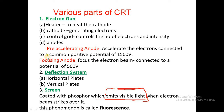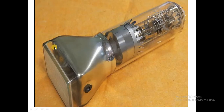We have two types of anodes in the CRT tube: pre-accelerating anode and focusing anode. The pre-accelerating anode accelerates the electrons and is connected to a common positive potential of 1500 volts. The focusing anode focuses the electron beam and is connected to a potential of 500 volts. The deflection system consists of horizontal plates and vertical plates. The screen is coated with phosphorus, which emits visible light when the electron beam strikes it — this phenomenon is called fluorescence.